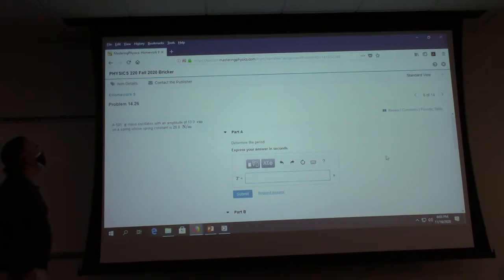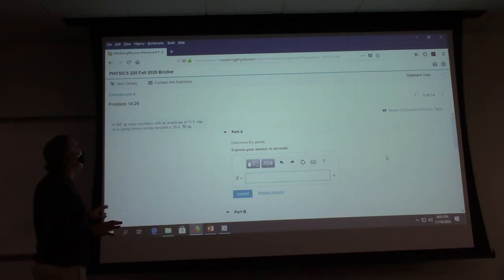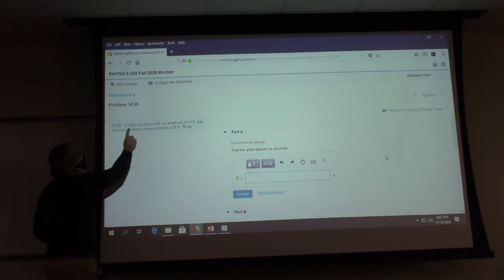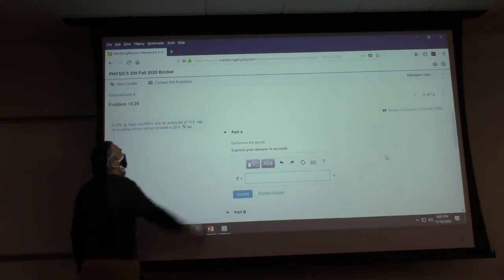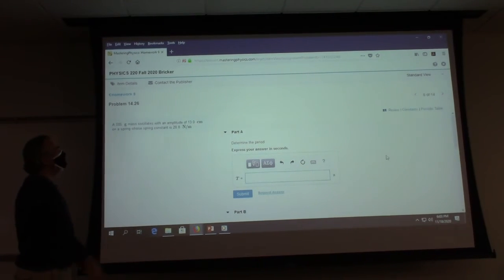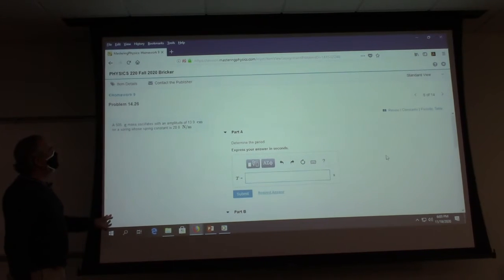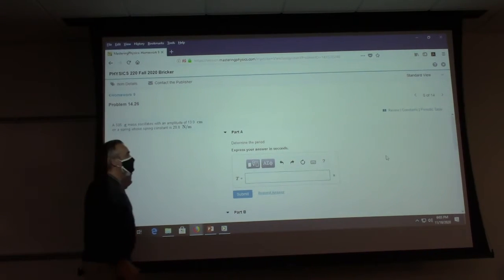So we've got a 505 gram mass oscillating with an amplitude. So mass, amplitude. It's stretched out 13 centimeters from equilibrium. We also know the spring constant, and we want to figure out the period.